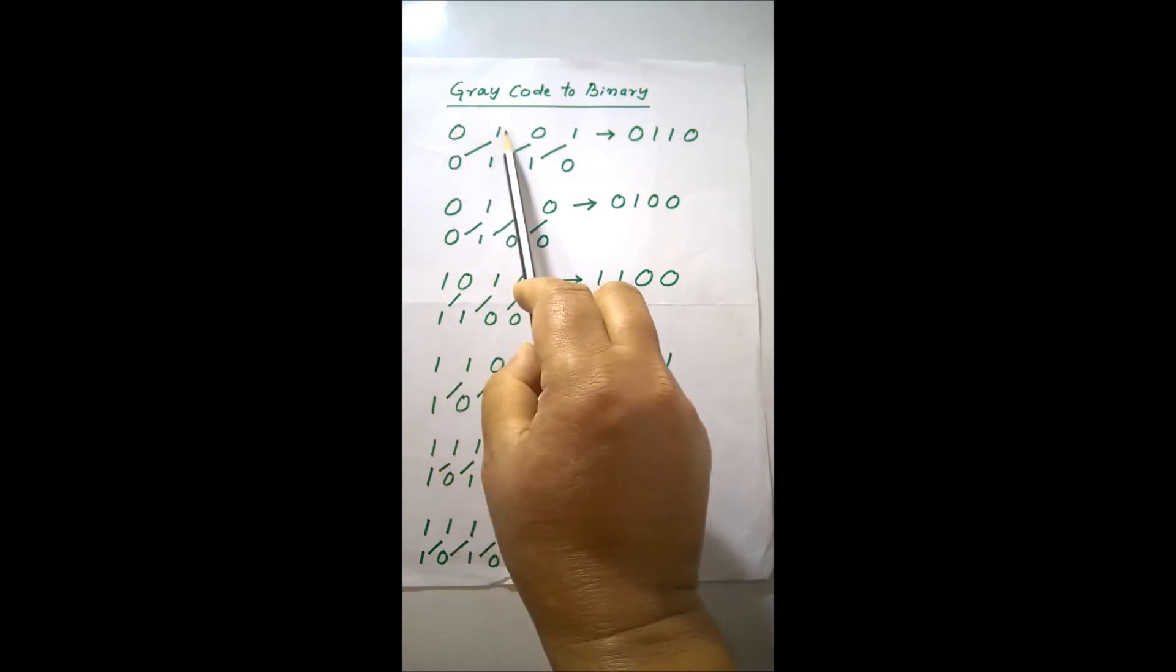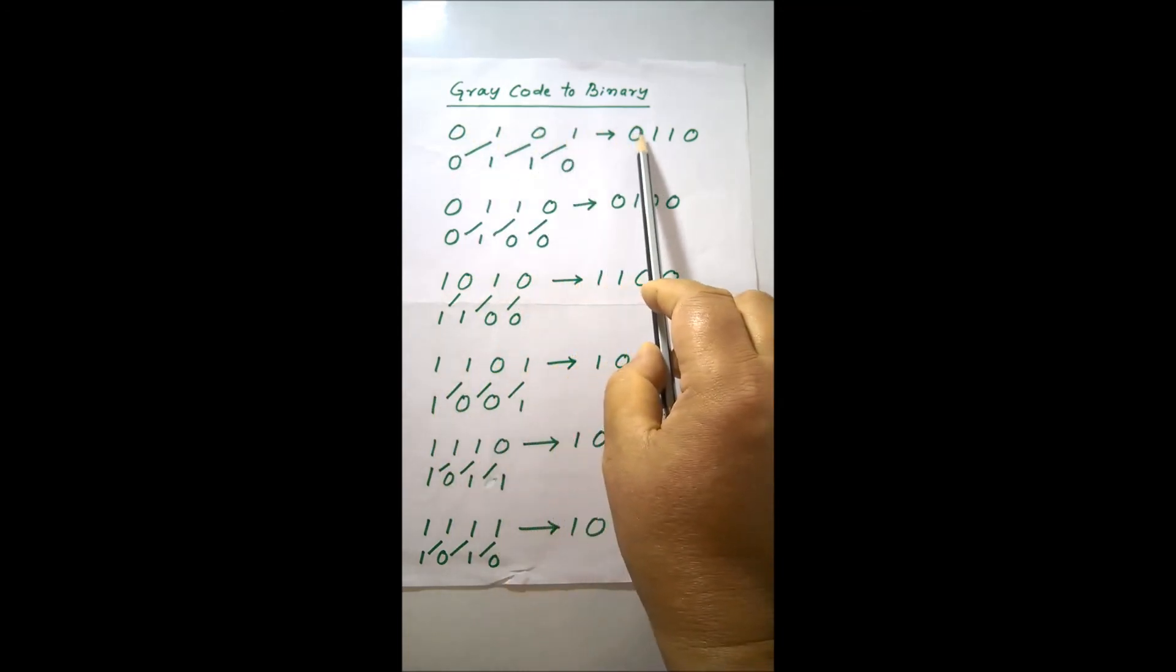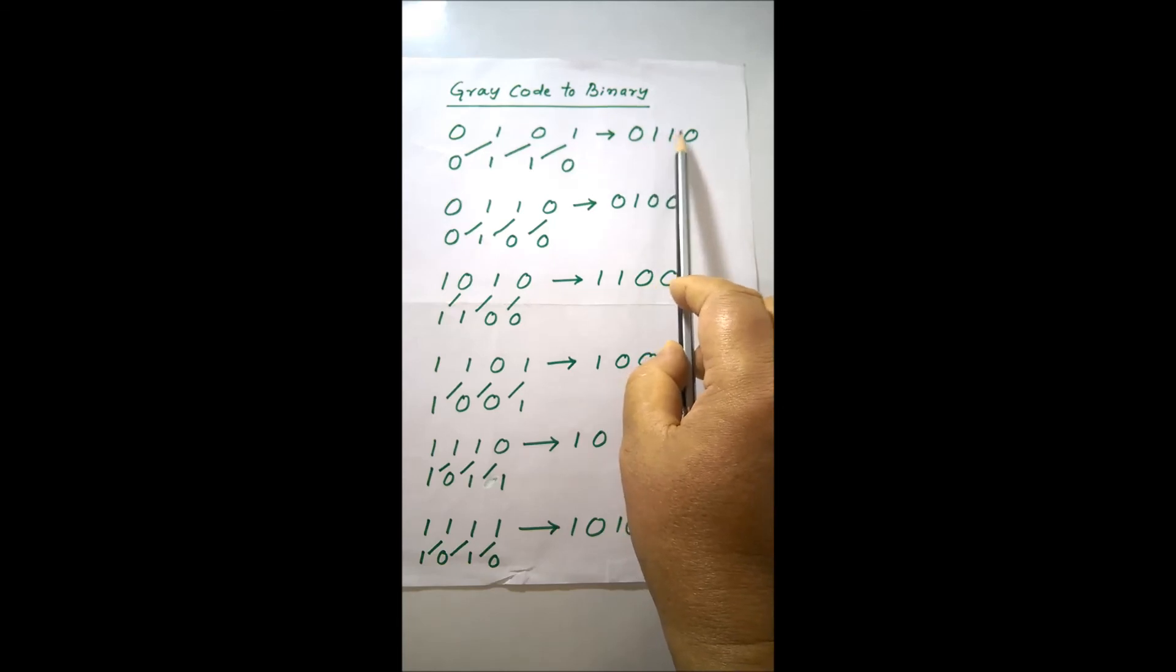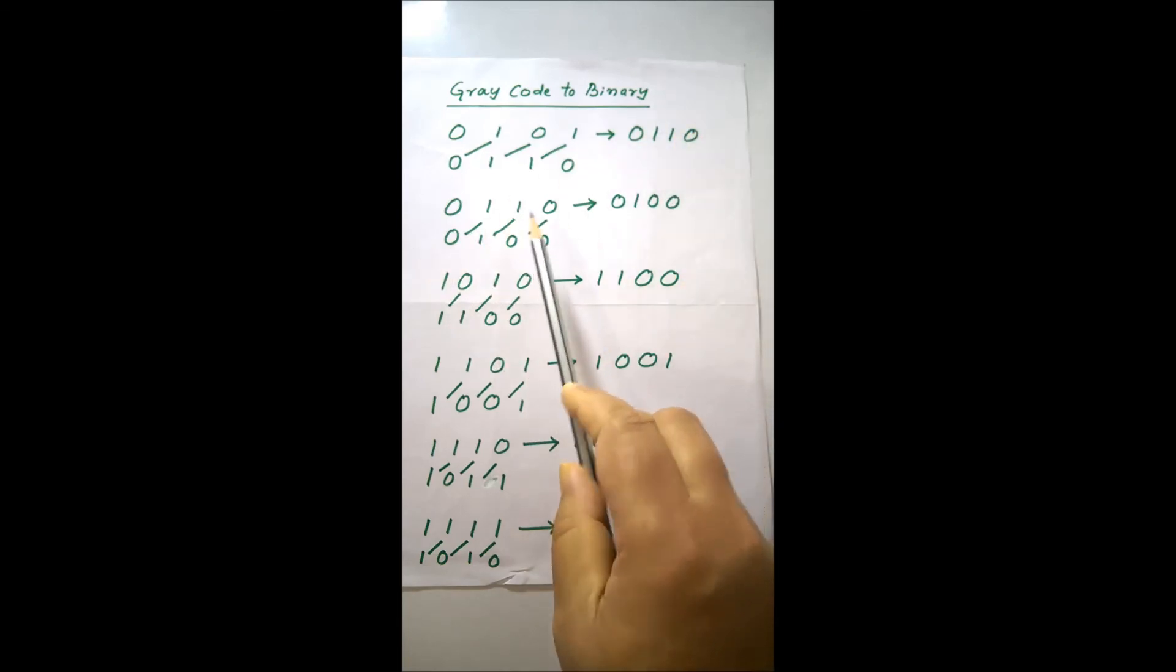0, 1, 0, 1. And the binary is 0, 1, 1, 0. Exactly, I show you the second also.